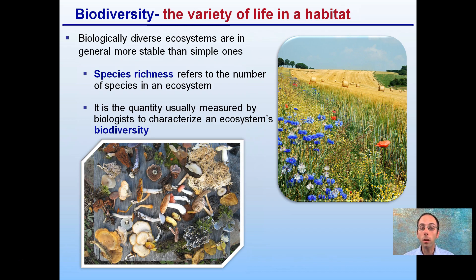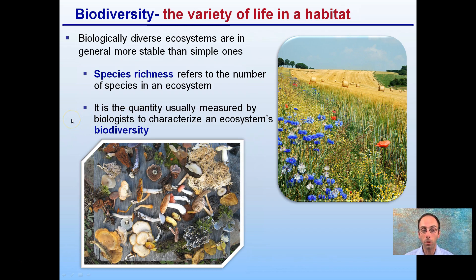Species richness refers to the number of species in an ecosystem. In ecosystems considered to be more species-rich, there are many different types of species. It's the quantity that's usually measured by biologists to characterize an ecosystem's biodiversity — the greater quantity we have, the greater the biodiversity, and the greater the variety of life in the habitat.